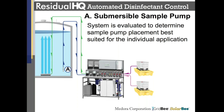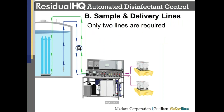The first component is the submersible sample pump, located in the circulated water column at a position best suited for each application. Water is continuously circulated, providing a representative sample to the chlorine sensors at all times. This pressurized flow is also used to dilute and mix the concentrated disinfectants, as well as automatically flush and clean the majority of the injection components. Only two lines are required — one sample line from the tank and one delivery return line containing the disinfectant solutions — minimizing tank modifications and simplifying system placement.